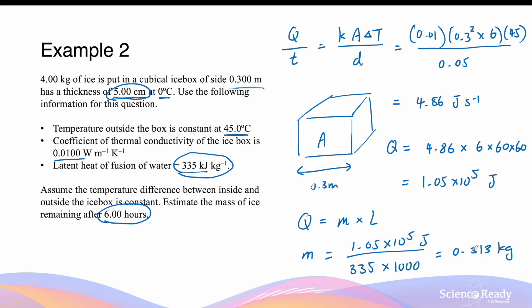So 0.313 kilograms is how much ice has been melted into water. Going back to the question, it asks for the mass of ice remaining, so we subtract the amount melted from the original mass of 4 kilograms: 4 minus 0.313 gives us 3.69 kilograms of ice remaining. This concludes the video on rate of heat transfer via conduction.